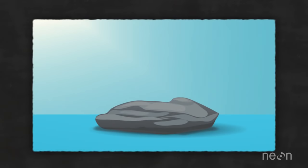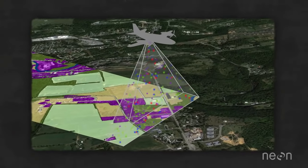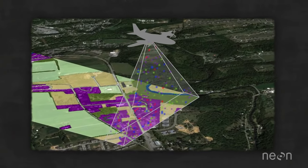To review, different objects reflect, absorb, and transmit both visible light and light energy that we can't see differently. Imaging spectrometers record the amount of light that these objects reflect.